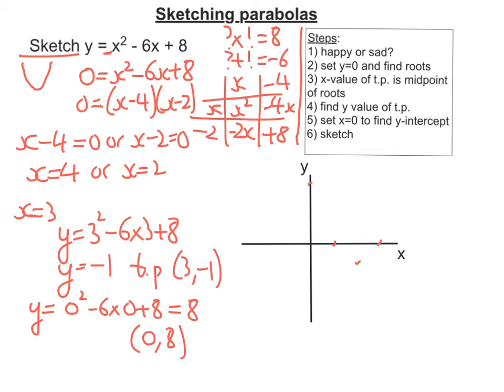Lastly, I need to sketch it. Okay, so then we'll go through there. And if we just label the points, we've got 8 here. We've got 2. We've got 4. And my turning point is at 3, negative 1. There is my graph sketched.